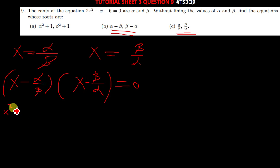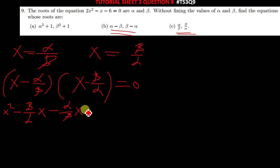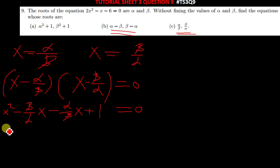You then expand: x times x gives x squared. x times negative β/α gives −(β/α)x. Then negative α/β times x gives −(α/β)x. Finally, negative α/β times negative β/α cancels to give positive one. So you have x² − (β/α)x − (α/β)x + 1 = 0.